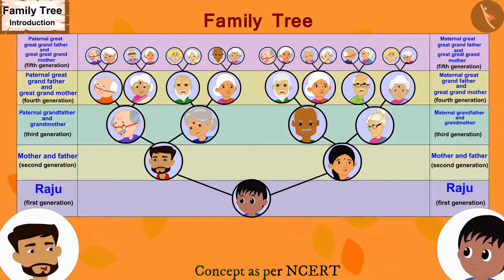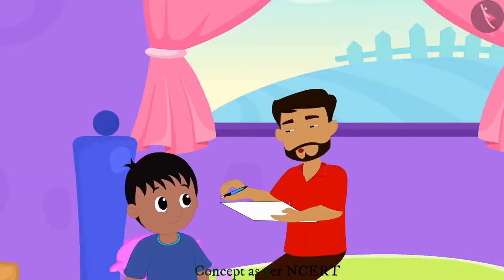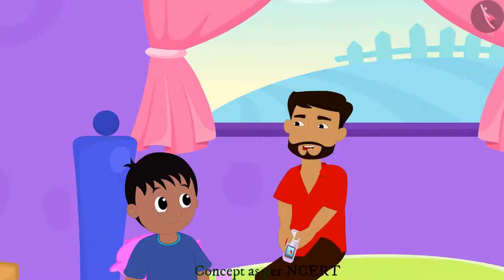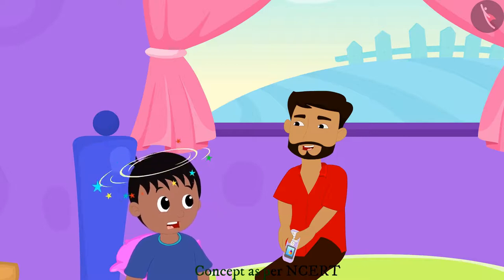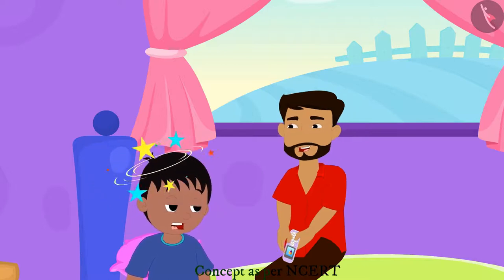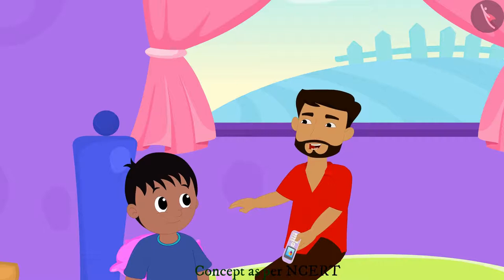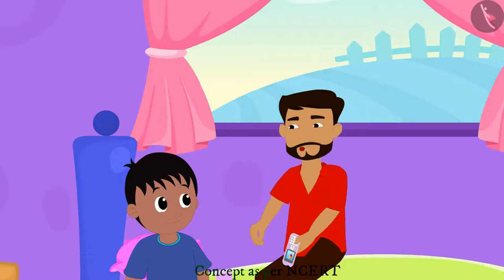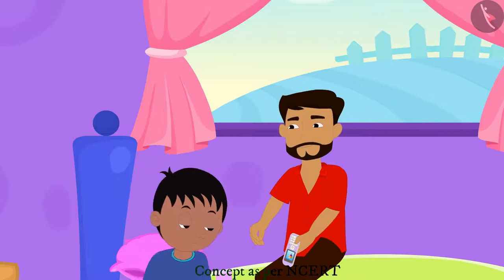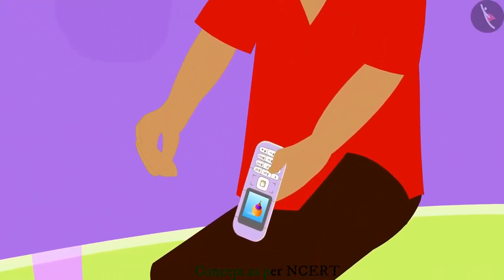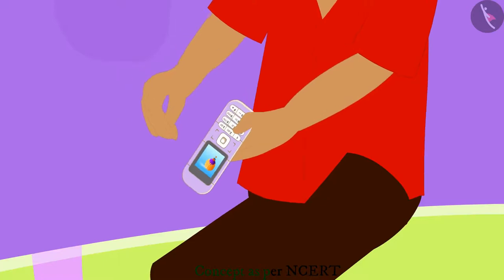With this, our family tree is now complete. Come on, now help me call all of them up quickly. Raju's head started spinning just by the thought of it. I was just kidding, Raju. You go play. I'll call them. Raju quickly ran to play and Raju's father started making calls to invite all his relatives.